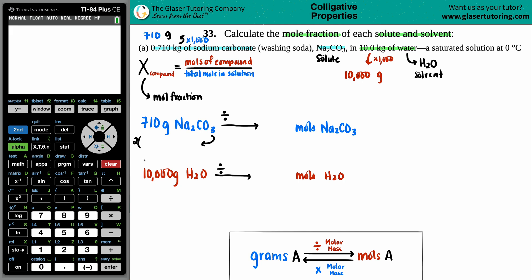Let's look up on the periodic table what the molar mass of Na2CO3 is. You have two sodiums, each sodium is 22.99, plus one carbon which is 12.01, and then plus three oxygens, and oxygen is 16 right on the dot. Two times 22.99 plus 12.01 plus three times 16. I got 105.99. So I'll take my 710 grams of Na2CO3, divide it by that number, and I have the moles: 6.699.